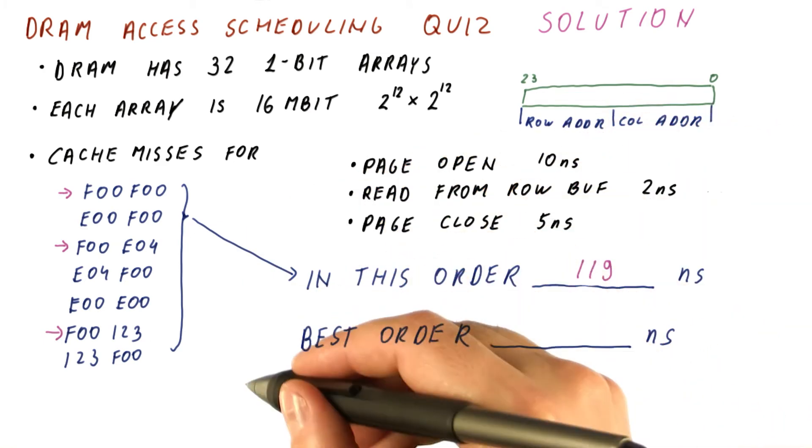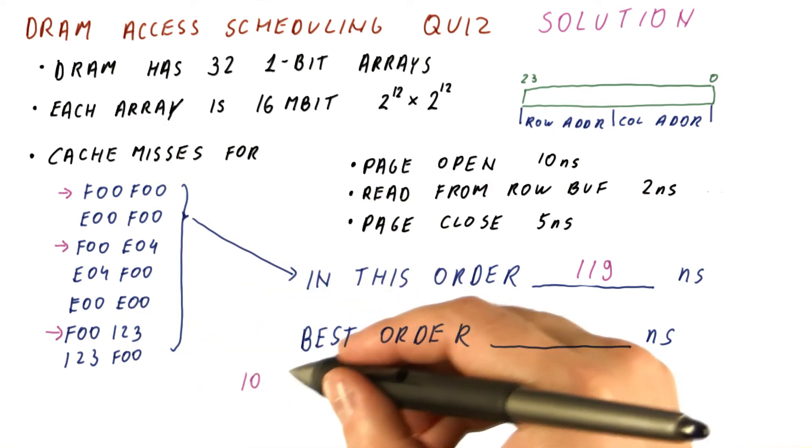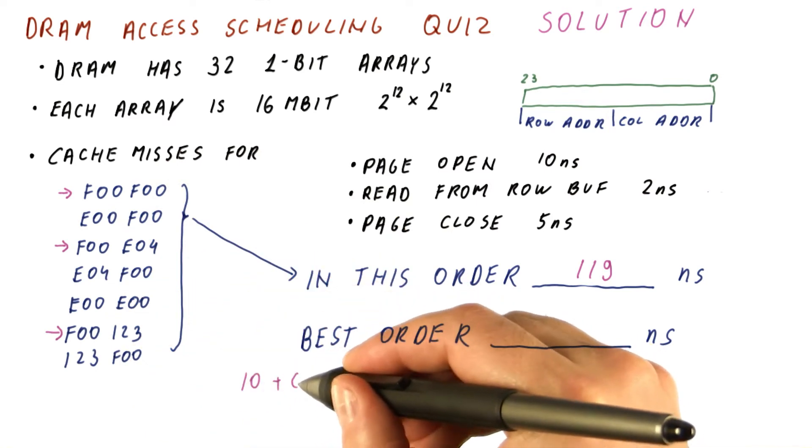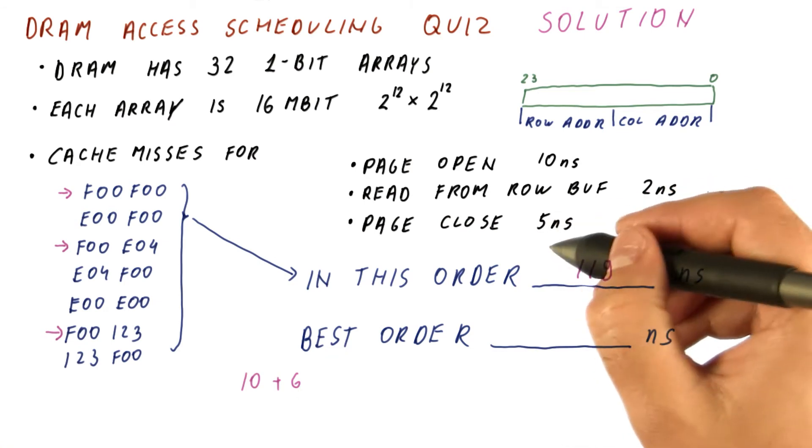Now what happens is we spend 10 nanoseconds opening that row, three times two nanoseconds reading these three things, and then we need to close the row in another five nanoseconds.